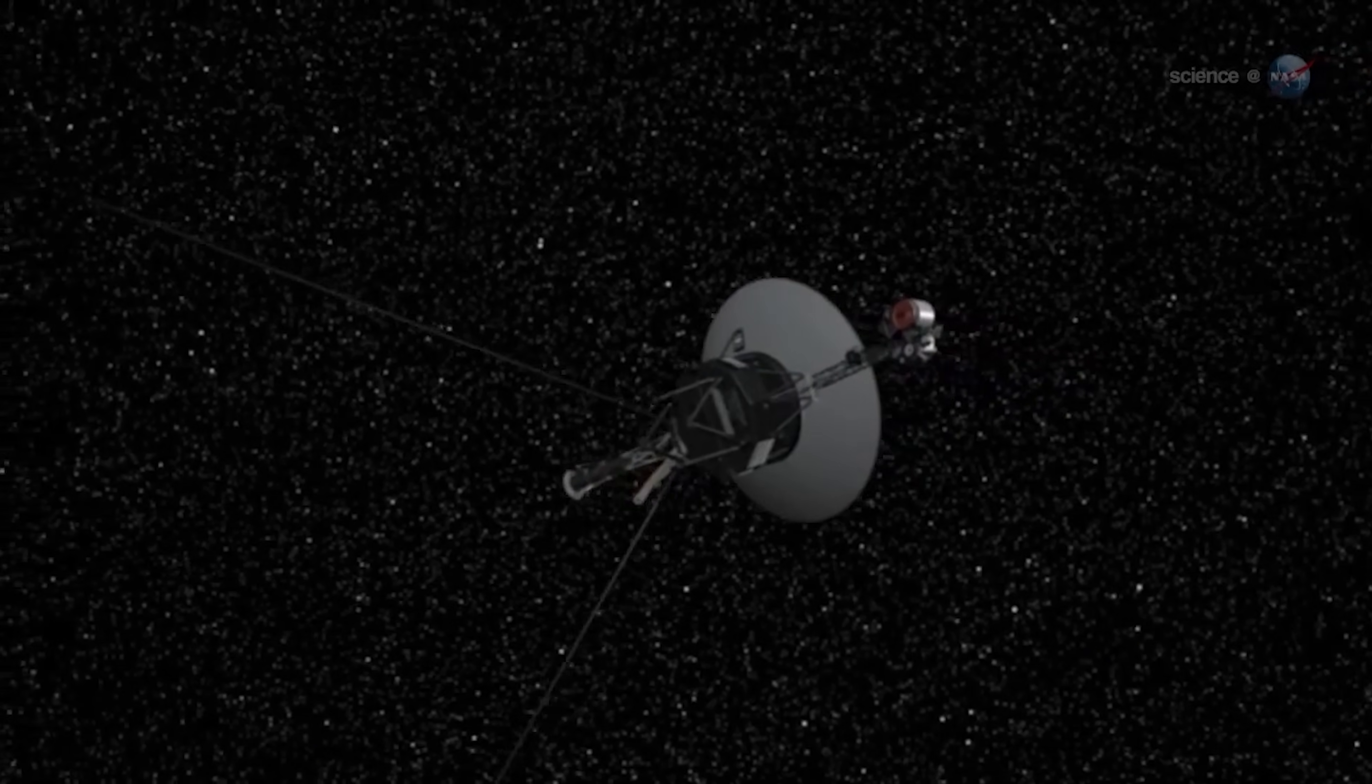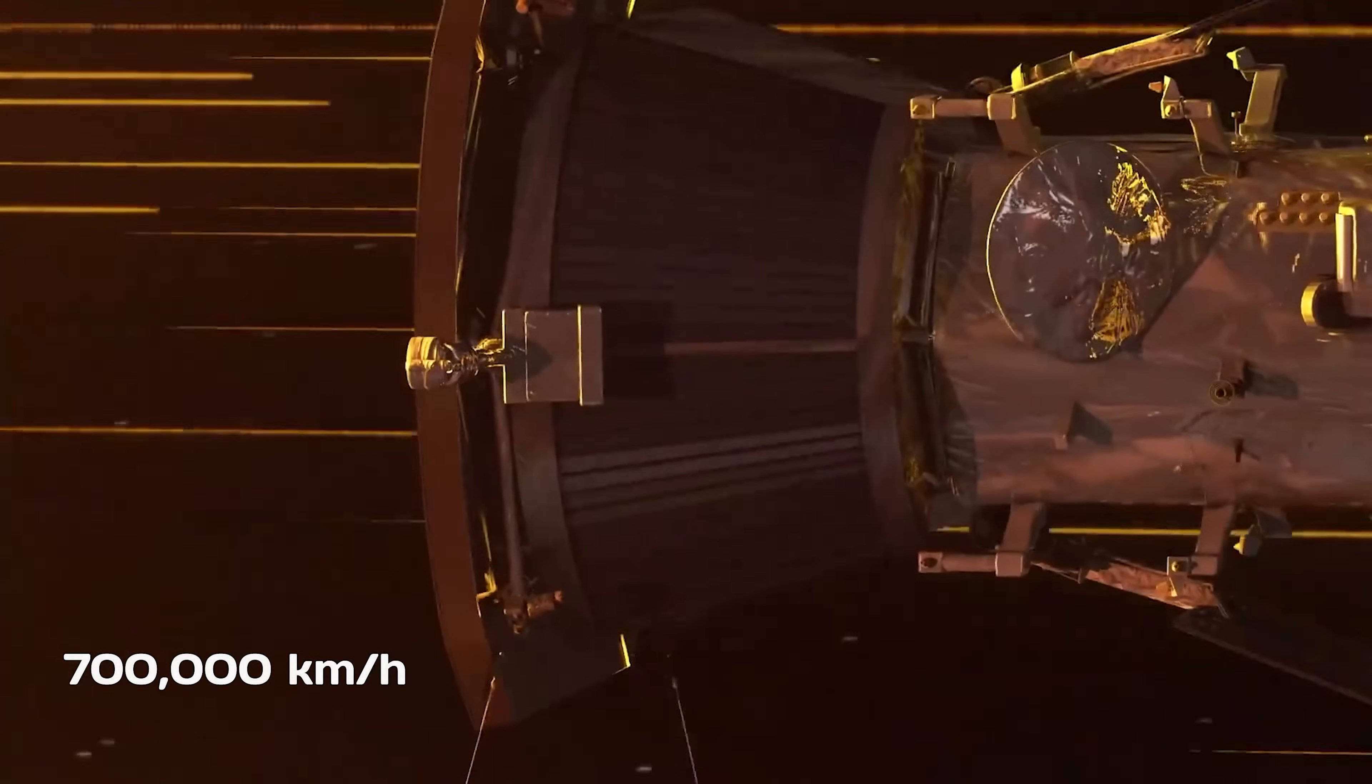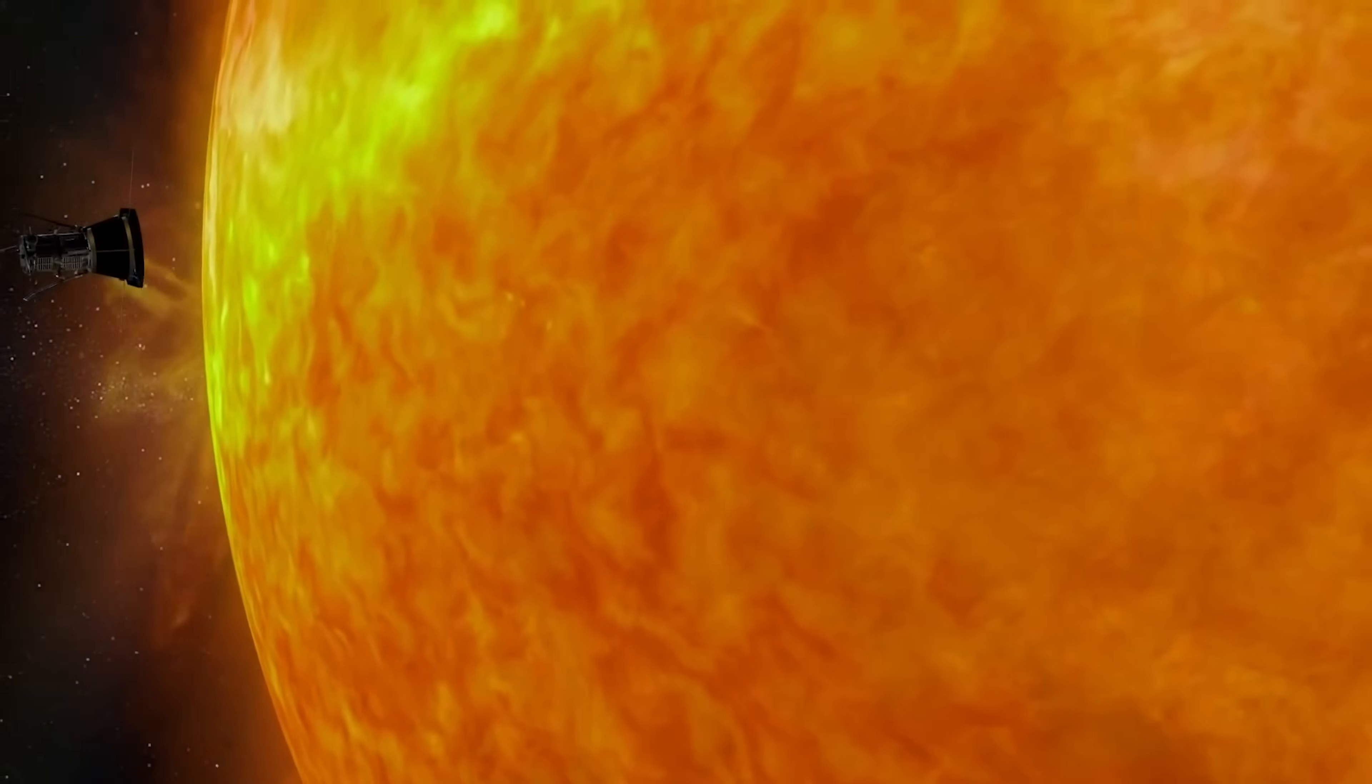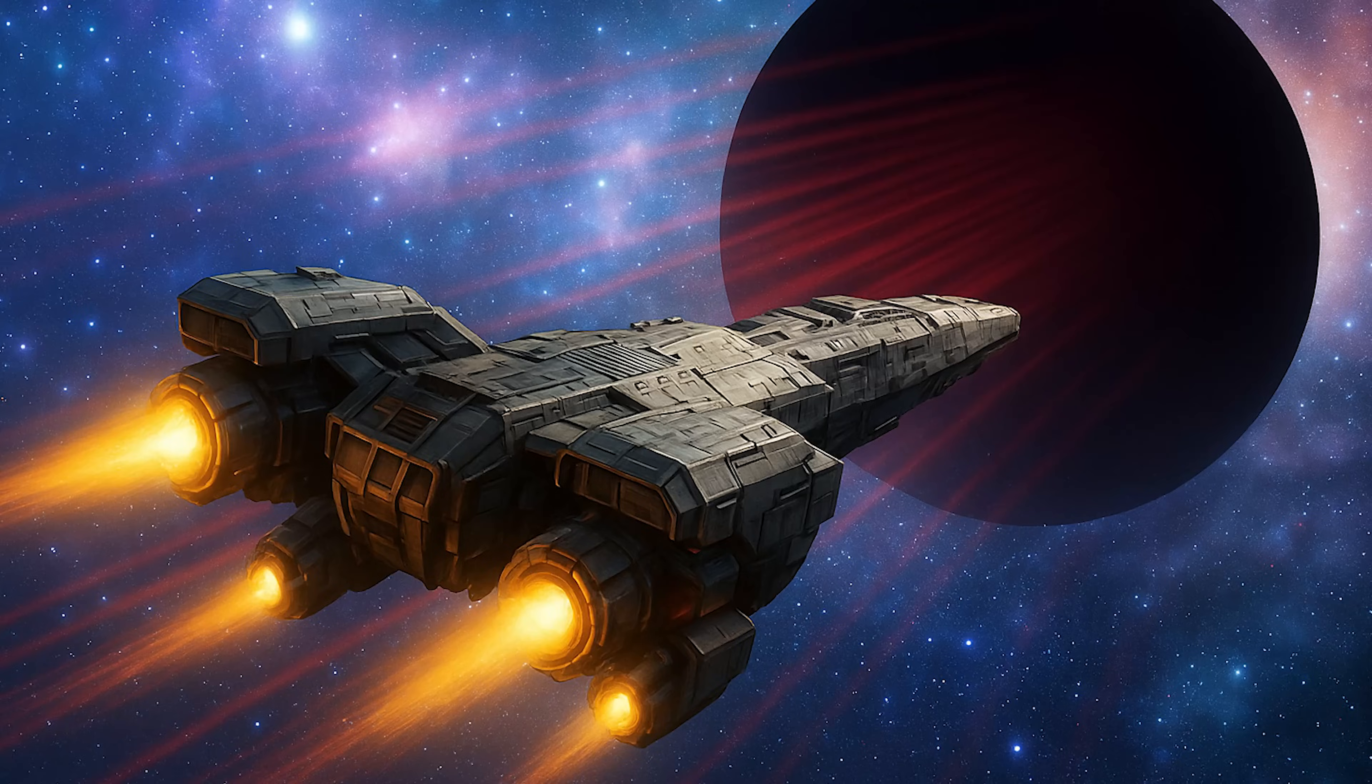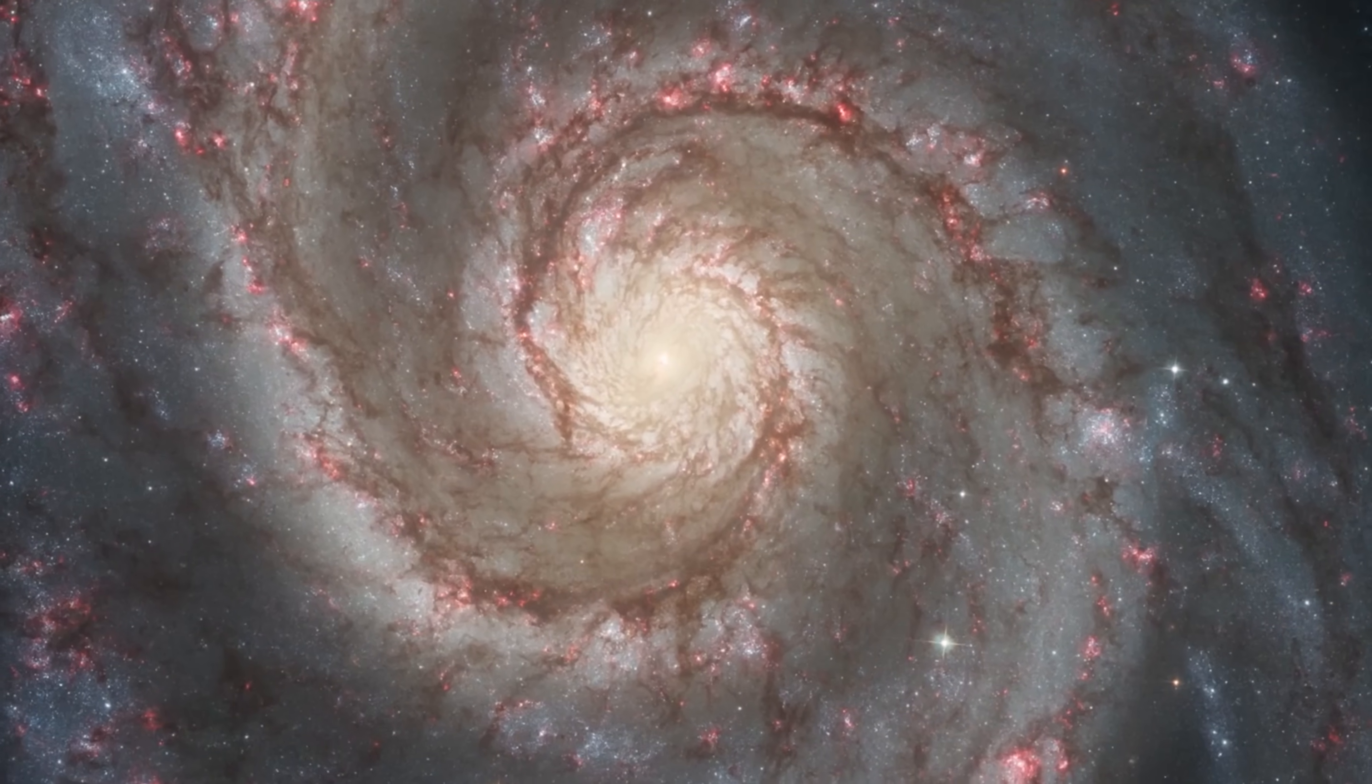A more recent example is the Parker Solar Probe, which made history in 2021 as the first spacecraft to fly through the sun's corona. At its peak, it travels at an astonishing 700,000 kilometers per hour, fast enough to get from Philadelphia to Washington, D.C. in under a second. But it only reached that speed in very short intervals, and even then, it was just 0.06% the speed of light. So yes, we're making progress, but it's still not sustainable for long-distance interstellar travel. We'll need to do a lot better than that if we want to reach the closest exoplanet to us in any reasonable amount of time.